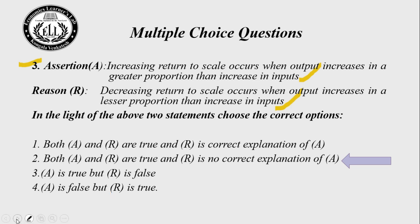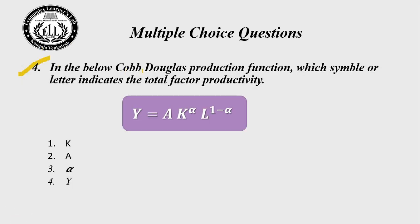Question 4: In the Cobb-Douglas production function Y = A · K^α · L^(1−α), which symbol indicates total factor productivity? Options: (1) K, (2) A, (3) α, (4) Y. The answer is choice 2 — A indicates total factor productivity.